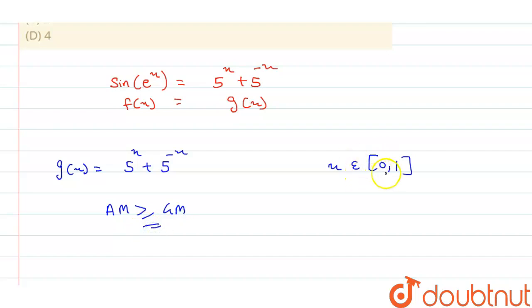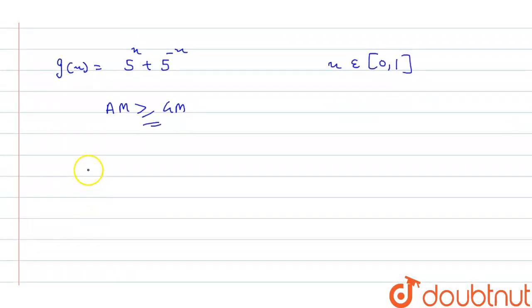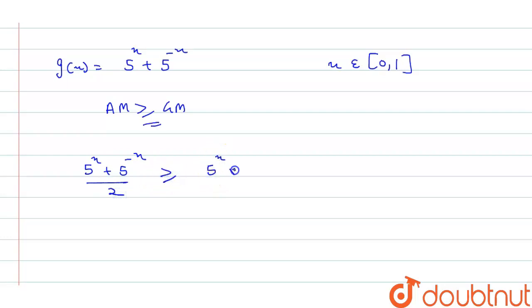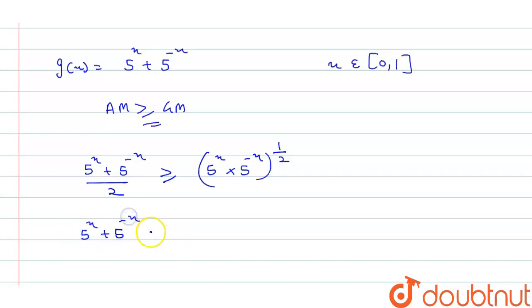We apply AM-GM because x is greater than 0. So we get: (5^x + 5^(-x)) / 2 ≥ √(5^x · 5^(-x)), which gives us 5^x + 5^(-x) ≥ 2.